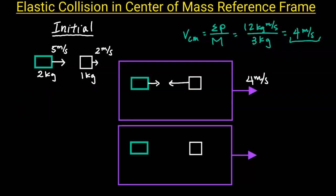So imagine that you're moving at 4 meters per second to the right and watching these two objects collide. From your center of mass reference frame, object 1 would appear to be moving at 1 meter per second, because you're moving at 4 meters per second to the right. And object 2 would appear to be moving at 2 meters per second to the left, towards you, because you're moving faster to the right.